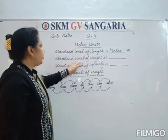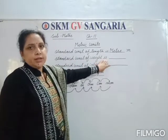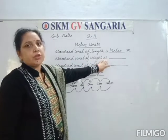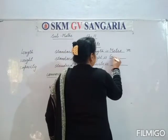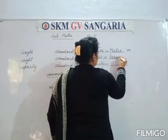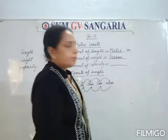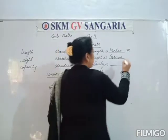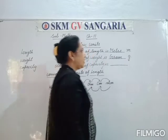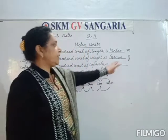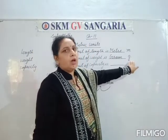The standard unit of weight is gram. It is denoted by G. So if we see G, then it means gram.